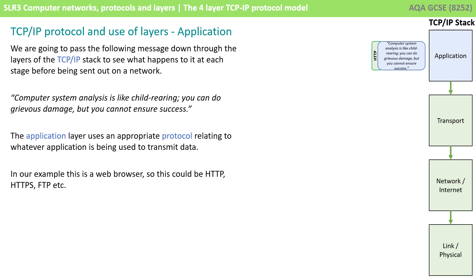The first layer the message has to go through is the application layer. This layer uses an appropriate protocol relating to whichever application is being used to transmit the data. For our example, we're going to assume this is a web browser, so the protocol could be HTTP or HTTPS. You can see there's our message plus a header, which in real terms will be additional ones and zeros added to the packet of data, so we know what application is needed to process the data once it reaches the other end.